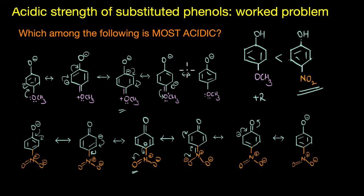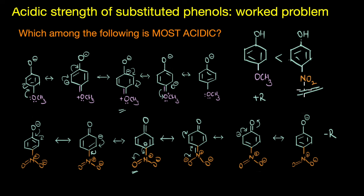Regarding the substituent effect: an electron donating group decreases the acidic strength by decreasing the polarity of the C-O bond, whereas an electron withdrawing group increases the acidic strength by stabilizing the conjugate base and by making the C-O bond more polar.